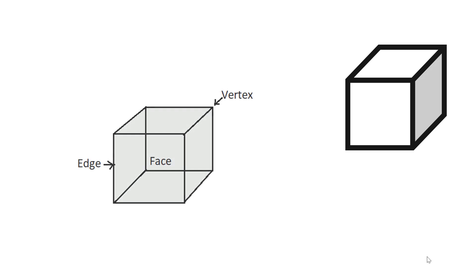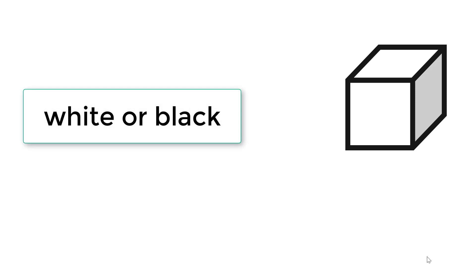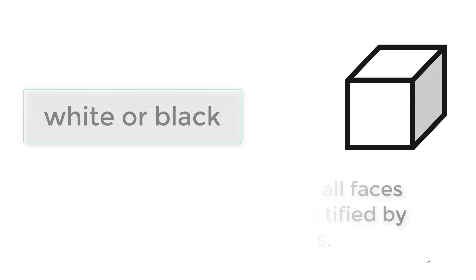In geometry, a cube is a three-dimensional solid object bounded by six square sides with three meeting at each vertex. According to the problem, each face of the cube can be painted in white or black, which results in multiple cases. The basic assumption is that all faces are identical and not identified by different numbers. Let's consider different cases and analyze the problem.